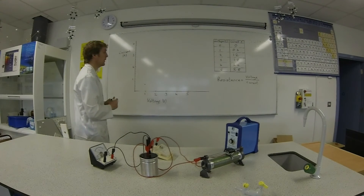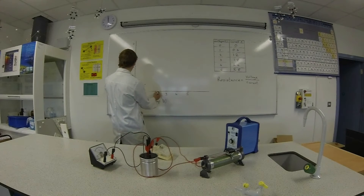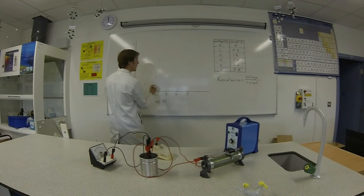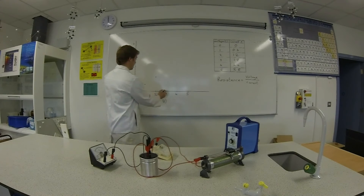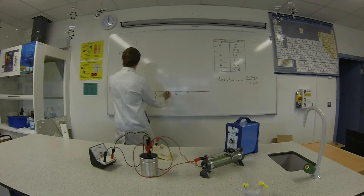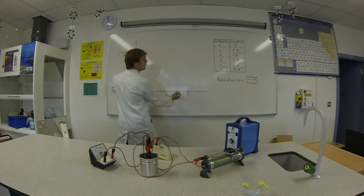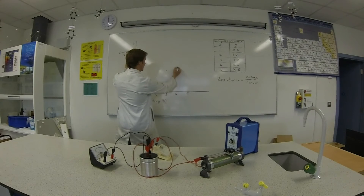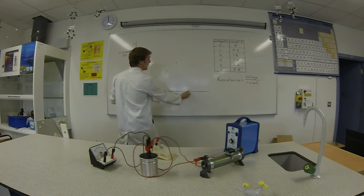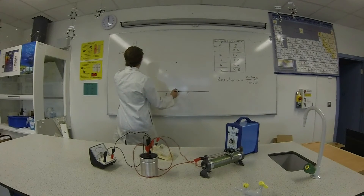Then we have two volts and 1.2 amps. Three volts, 1.8 amps. Four volts gave us 2.4 amps. And five volts gave us 2.8 amps.